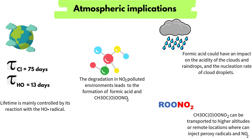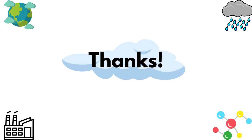Formic acid could have an impact on the acidity of clouds and raindrops, and on the nucleation rate of cloud droplets by facilitating deformations. Therefore, MG degradation could have some impact on such processes on a regional scale. Thanks for your attention.